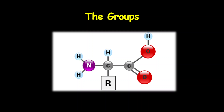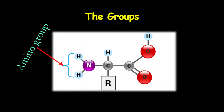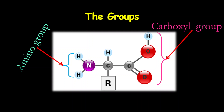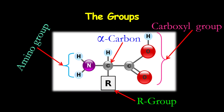Now let's put the groups in perspective. Notice our NH2 on the left — that is our amino group or amine group. We have our carboxyl group, which is COOH on our right. Then we have our R group. What is very important to note is that the carboxyl group, the amino group, and the R group all connect to the same carbon. That carbon is called the alpha carbon. So please make a note that the three groups are connected to the same carbon, which is the alpha carbon.